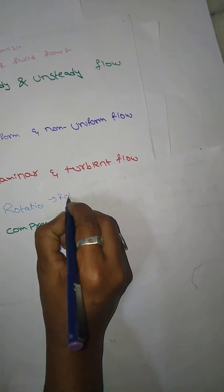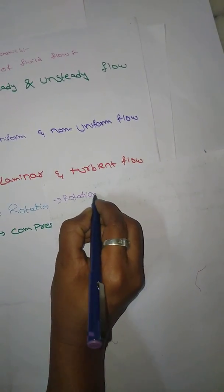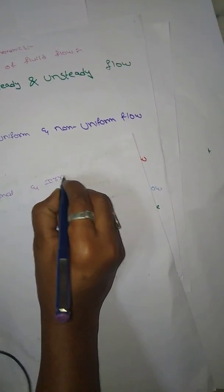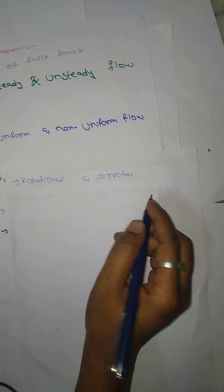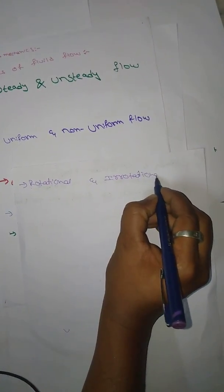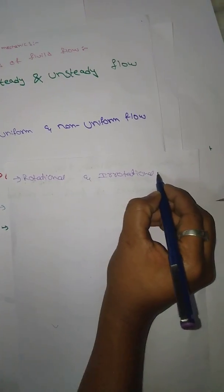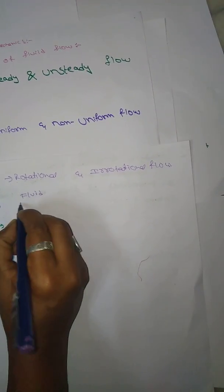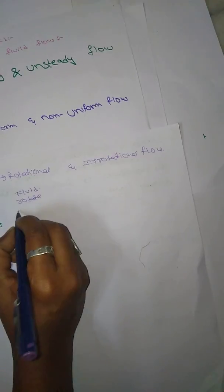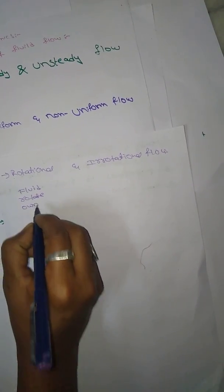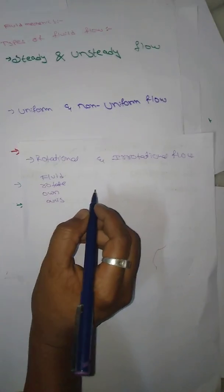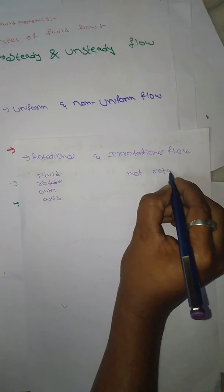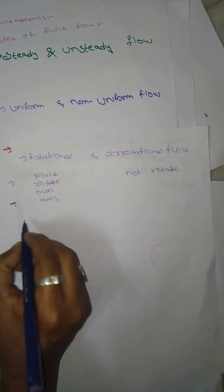Next, rotational and irrotational — that is 10 subjects. Very simple. Rotational, irrotational flow. As you can see, the fluid rotates about its own axis — that is rotational flow. If it does not rotate, that is irrotational.